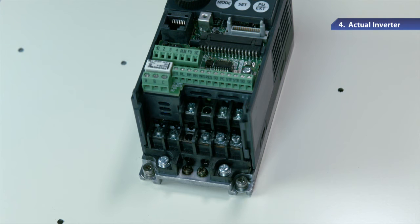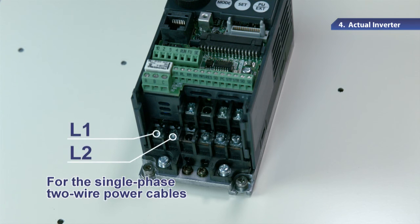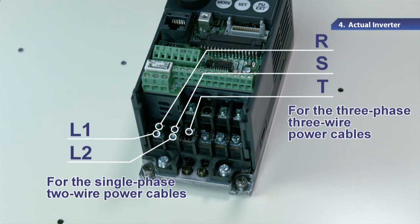First, please make sure the power is off. Then, connect the power cords to the inverter terminals. Connect the single-phase, two-wire power cables to the main circuit terminals L1 and L2. Connect the three-phase, three-wire power cables to the main circuit terminals R, S, and T.